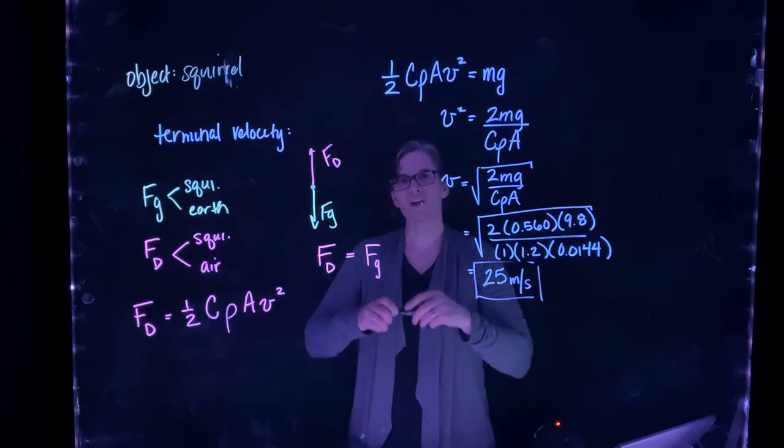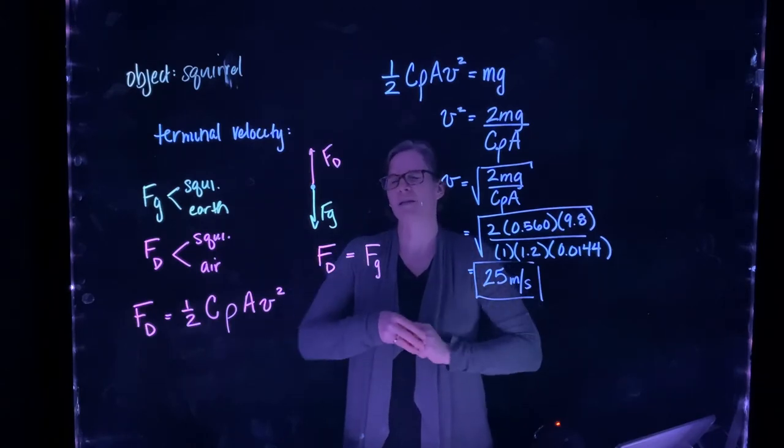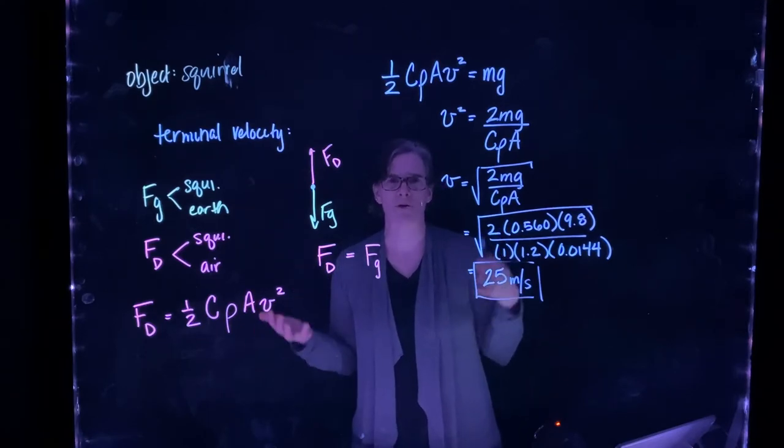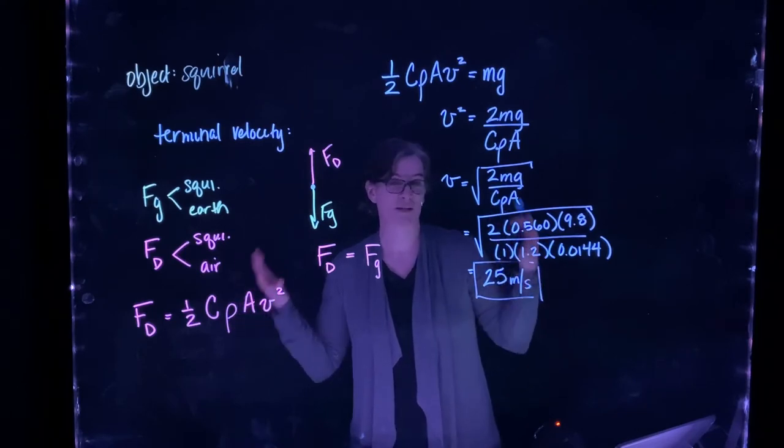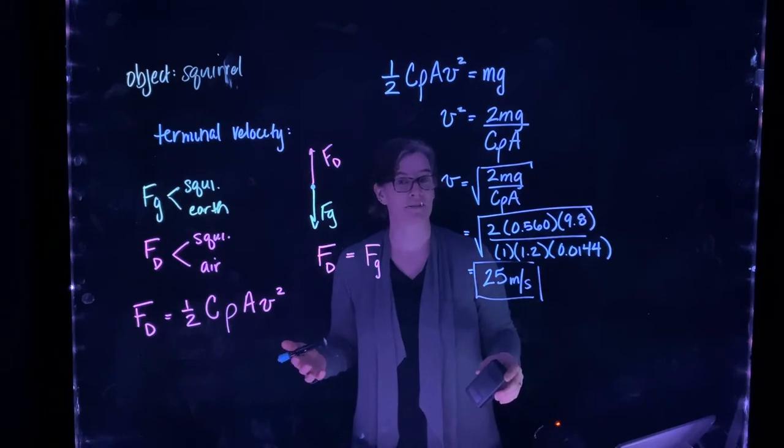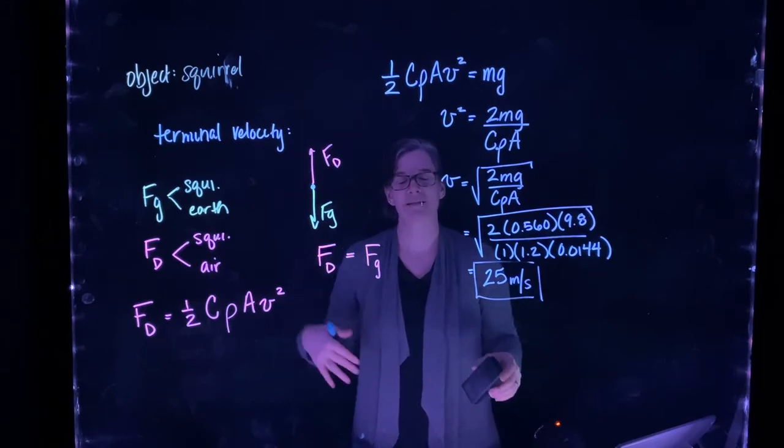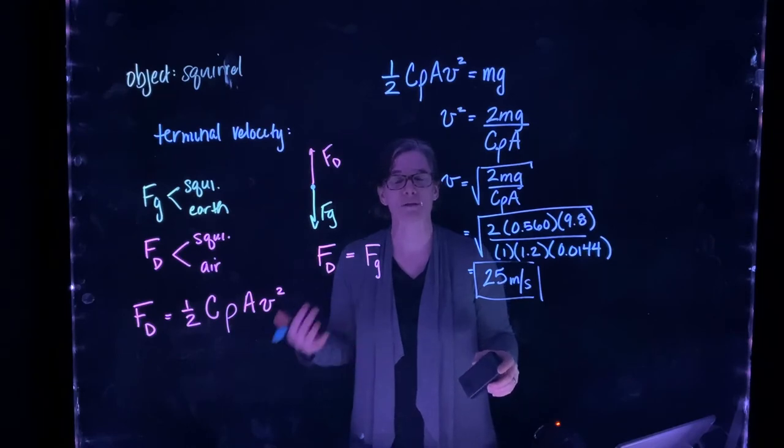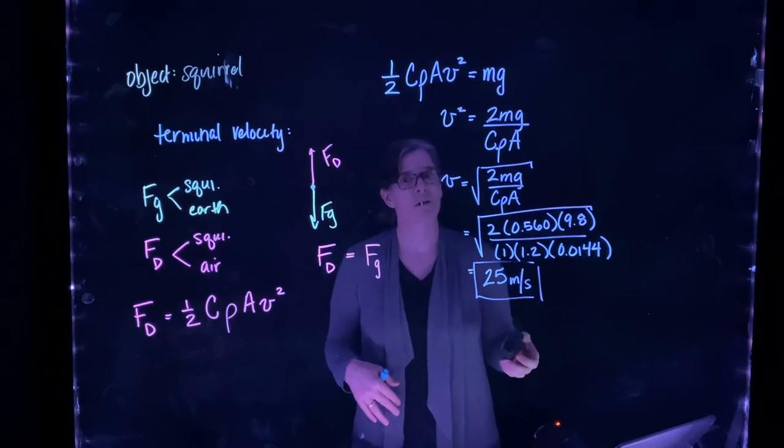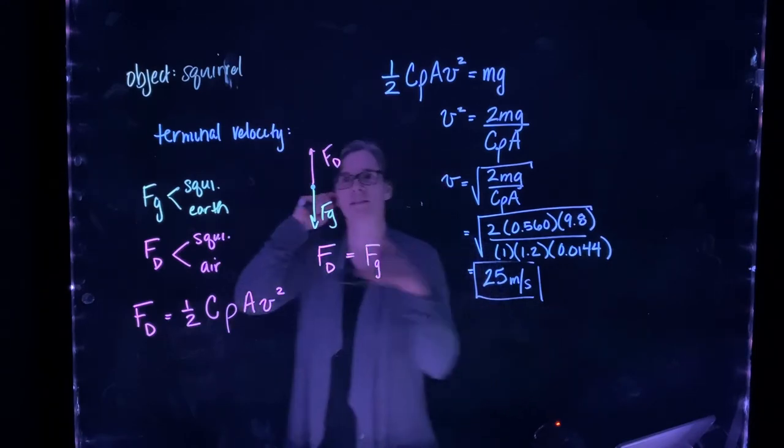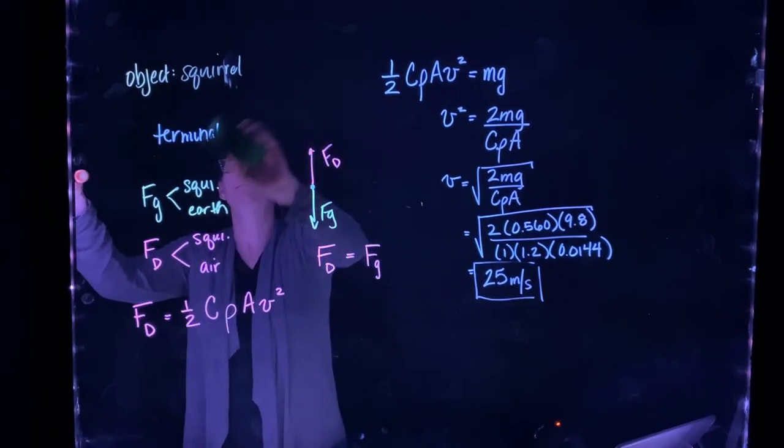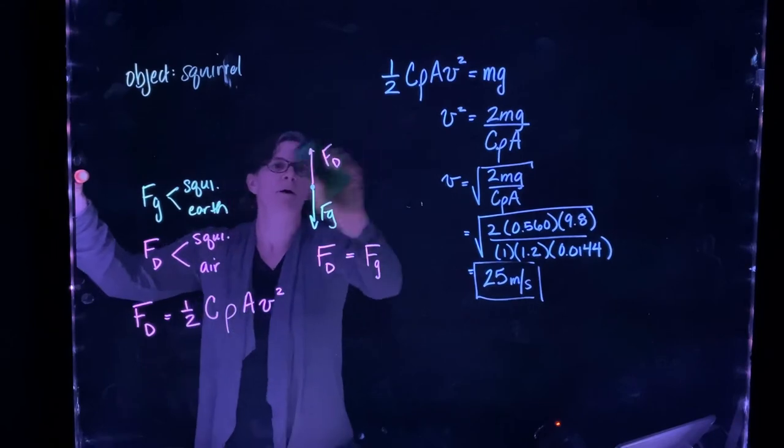Now we're told that the squirrel jumps off a 5 meter high tree, and we want to know what would be the situation for a gentleman jumping off a 5 meter high tree. We're going to ignore air resistance in this case. Short distance, heavy mass, we can ignore air resistance.